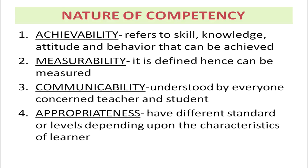Achievability refers to the skill, knowledge, attitude, and behavior that can be achieved. The second is measurability — competency is defined and hence it can be measured. The third is communicability, which means that the competency is understood by everyone — both the teacher and the student. The fourth is appropriateness, which means that competency has different standards or levels depending upon the characteristics of a learner.